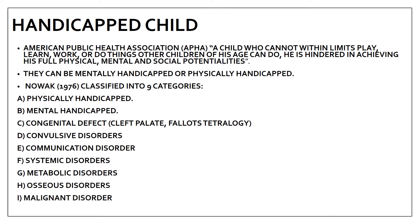What is a handicapped child? The American Public Health Association defines the handicapped child as a child who cannot, within limits, play, learn, work, or do things other children of his age can do, and who is hindered in achieving his full physical, mental, and social potential.